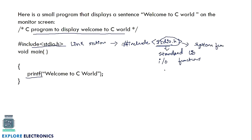We have many system functions available — printf is one example, f open is for opening a file, and f close is for closing a file. Likewise, there are many functions contained in the stdio.h library. This is the header file we are including in our program.